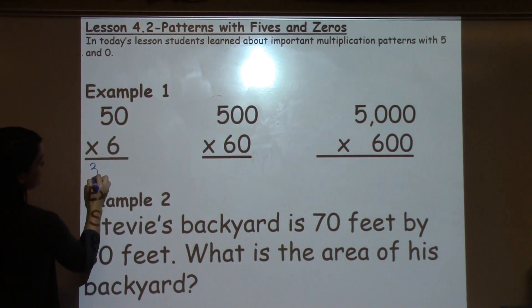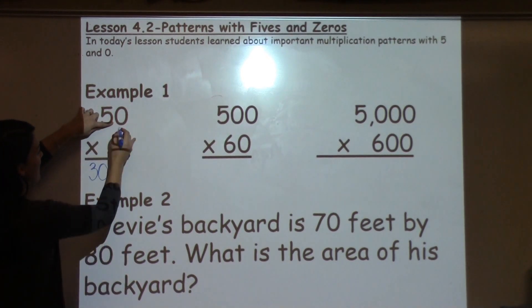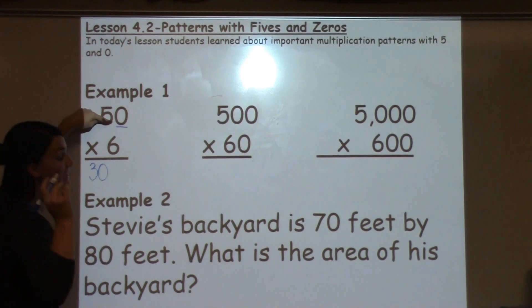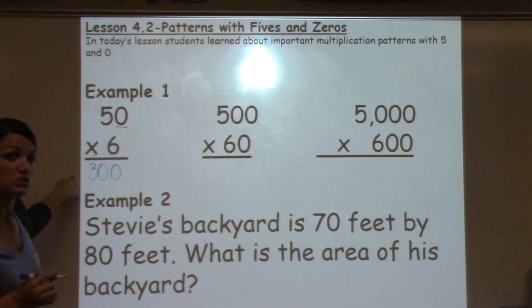5 times 6 is 30, so I write that down first. Then I go back through and say how many 0s did I take off? I need to add that many back on. So my answer becomes 300.